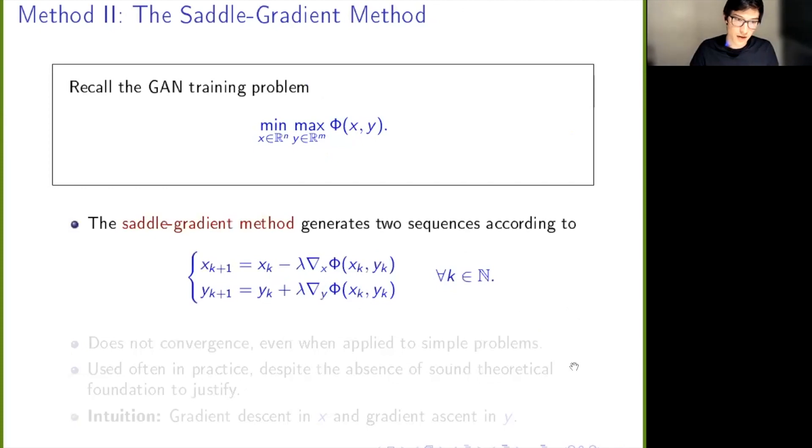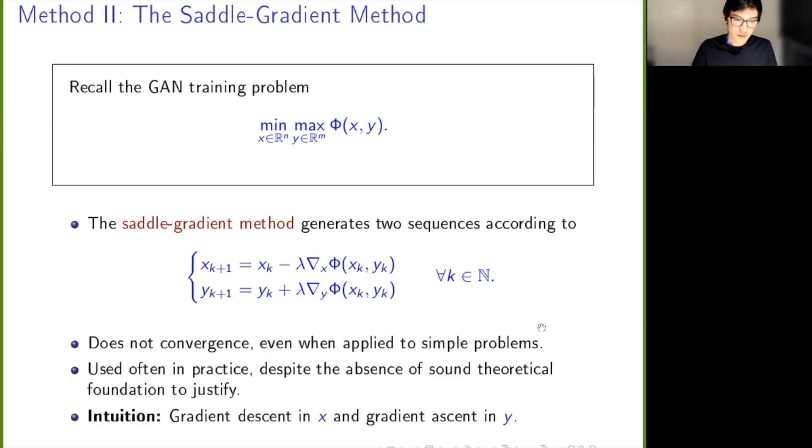Let's go back to this problem of training a GAN, this min-max problem. The first thing you might try to do is to use something that's called the saddle gradient method. It looks like this, so it's very close to gradient descent, probably you can see. What we have here is because we're trying to minimize with respect to x, we do gradient descent with respect to the x variables, which is why we just have the partial x gradient there. We're trying to maximize in y, so we do gradient ascent—we do the opposite to maximize the function. So you do plus instead of minus. You get two sequences, and this sounds like it should be a reasonable thing to do. The problem is it doesn't converge even when you apply it to really simple problems. But despite that, it's still actually used often in practice, but it's a bit fiddly. You have to set everything up exactly right, you have to sometimes change the starting point and various other things. But the theoretical foundations aren't there to justify it. What's the intuition for this method? It's what I just said earlier, I guess, right? You're doing gradient descent in one variable and you're doing ascent in the other variable.